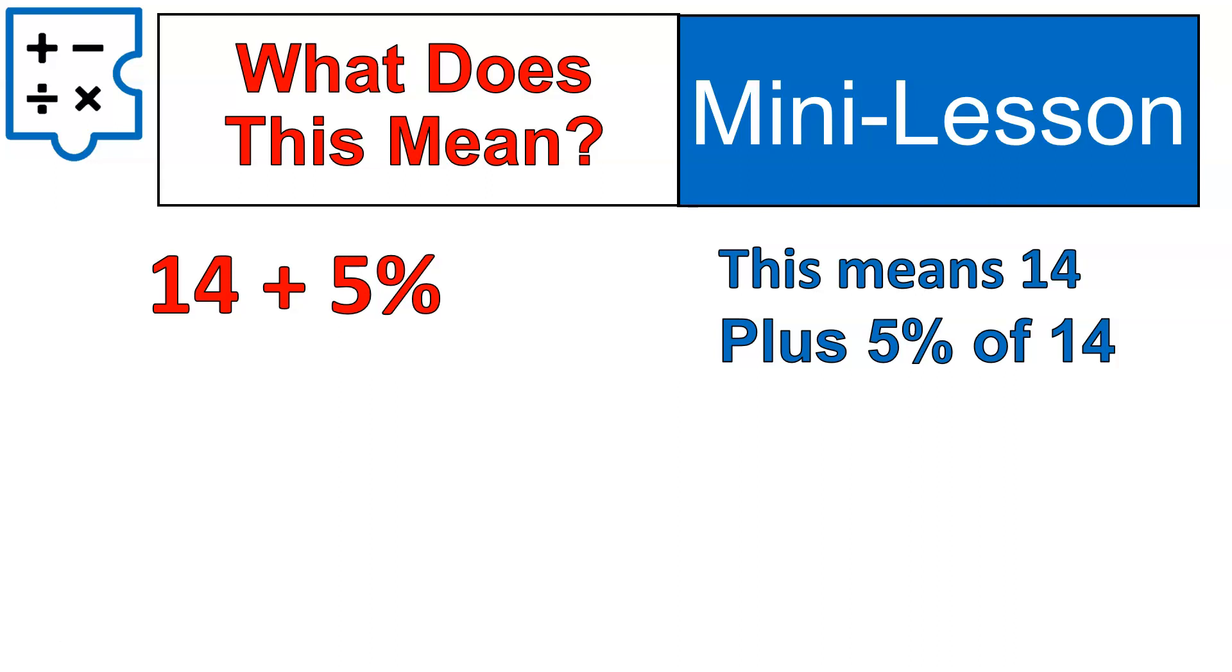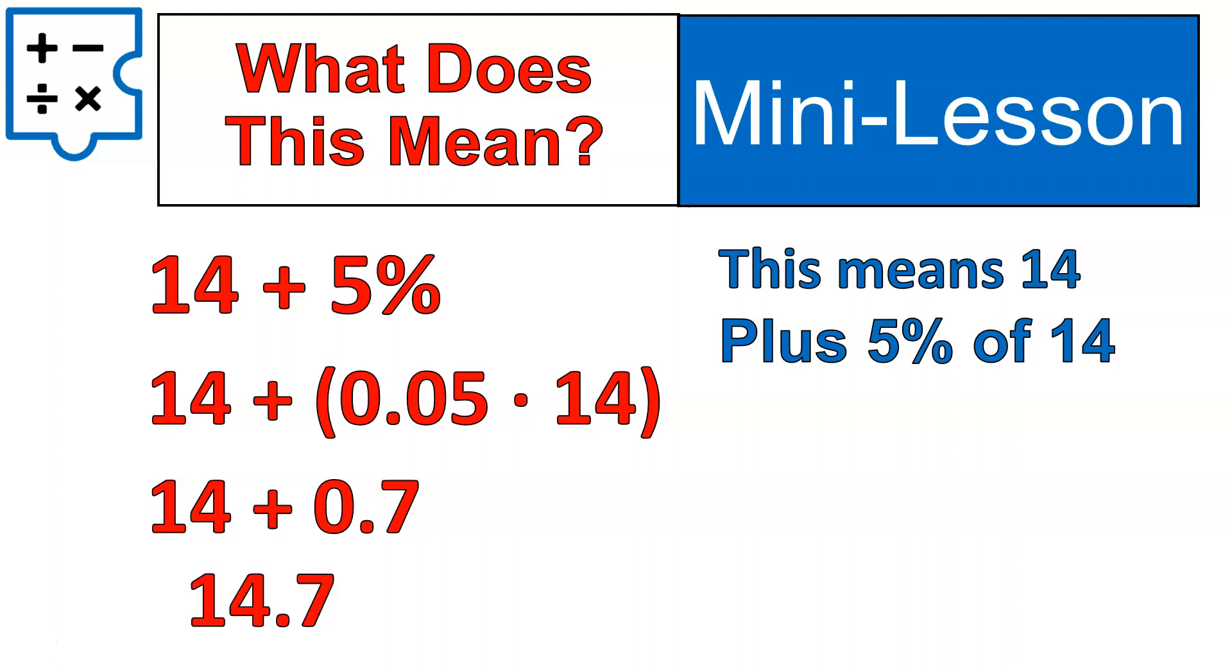So, what that means, 14 plus 5% of 14. The way we could write this is 14 plus, and I put inside those grouping symbols, 5%, which is 0.05, times 14. That's 5% of 14. Remember that of is multiplication. We can solve that 5% of 14 is 0.7. And then we can add those, 14 plus 0.7, and that gives us 14.7. So, that's quite a bit of work there, but it will help if we understand how to do it.